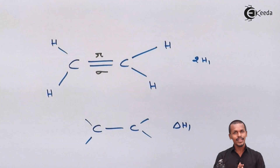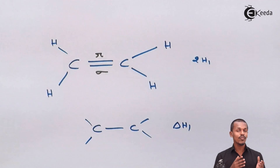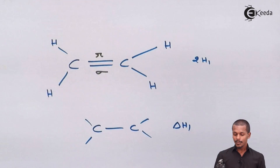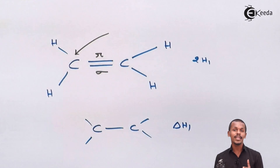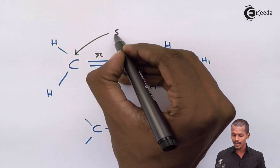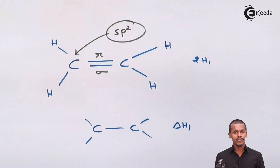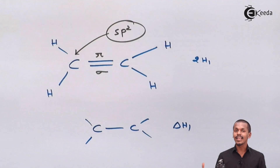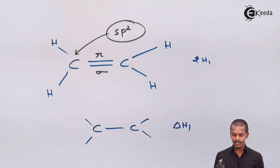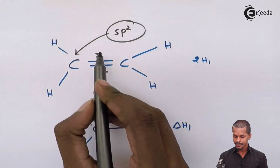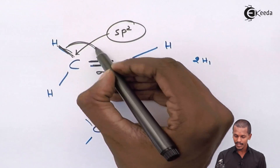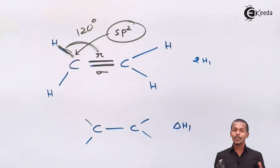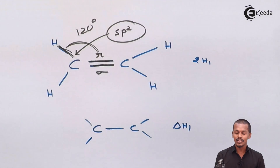Now talking about bond angles: in alkenes, both carbon atoms in the double bond exhibit sp2 hybridization. Because of this sp2 hybridization, the bond angle between carbon-carbon and carbon-hydrogen is 120 degrees.